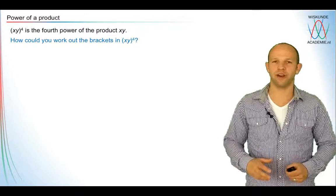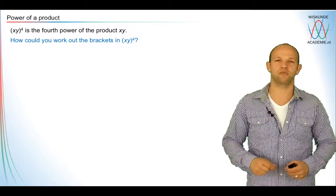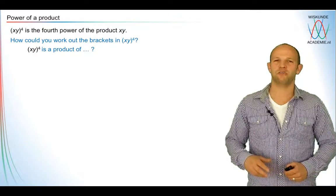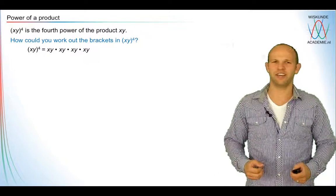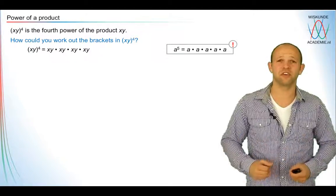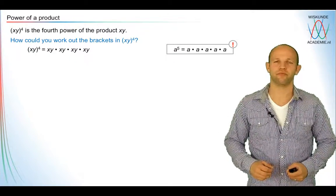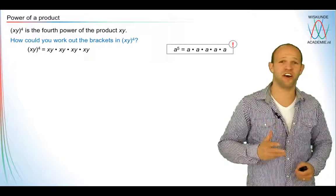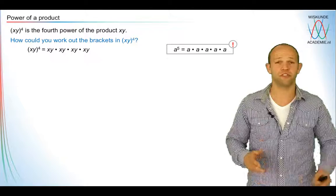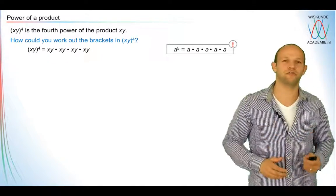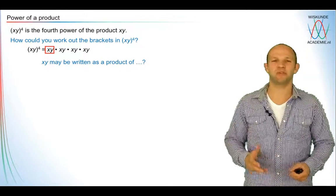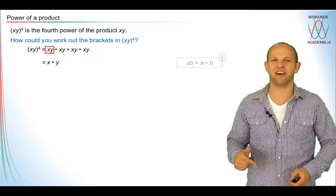So how could you work out the brackets in the expression (xy) to the power four? First of all, (xy) to the power four is a product: xy times xy times xy times xy — a repetitive multiplication of xy. Because we know that a to the power five was a times a times a times a times a. So in the same way we can do this with (xy) to the power four. Now, xy can be written as a product of x times y.